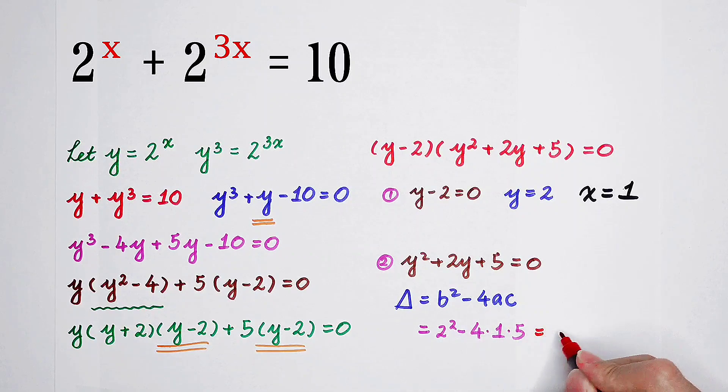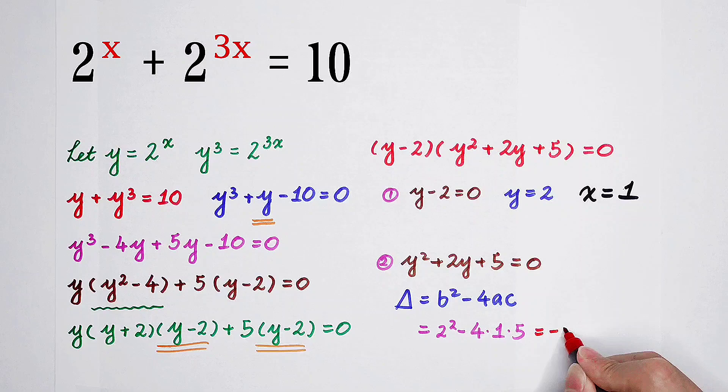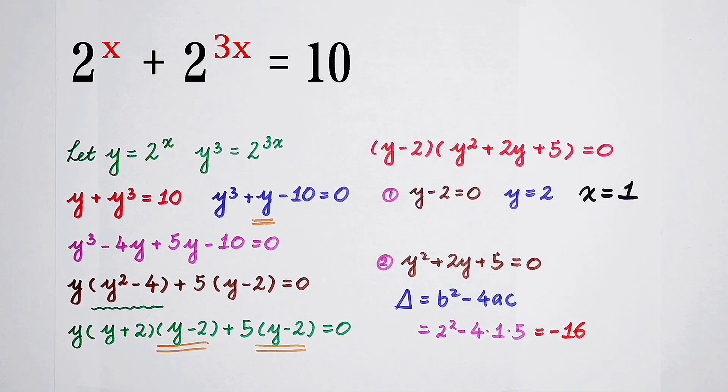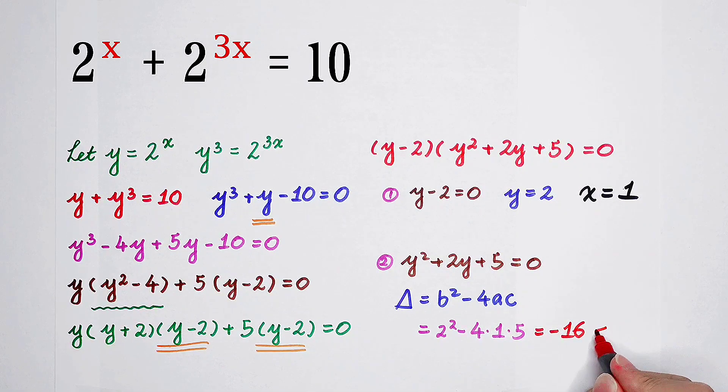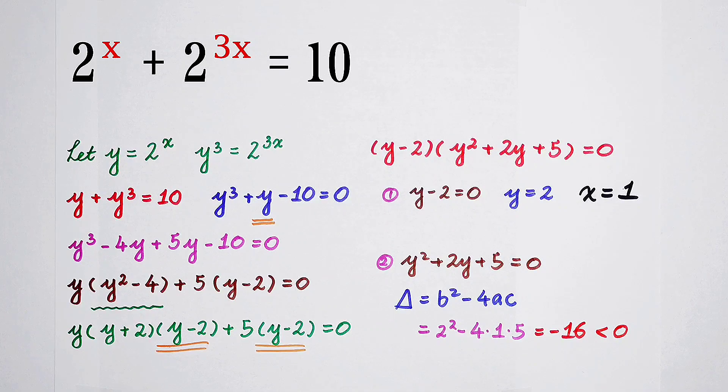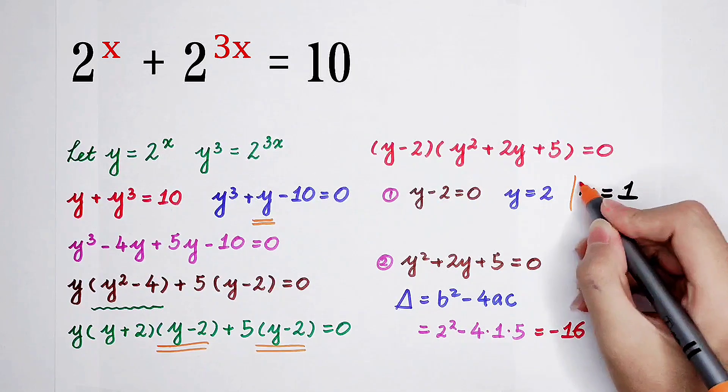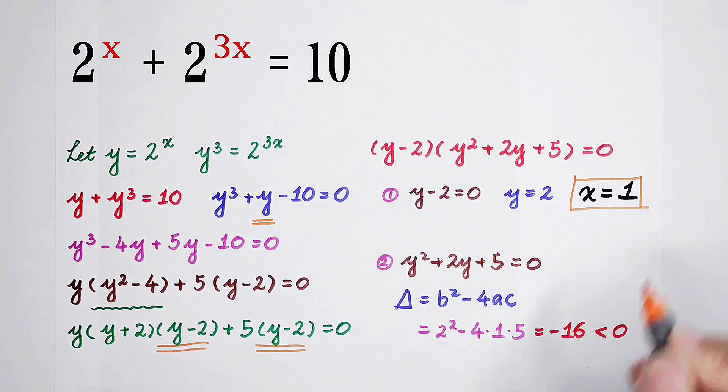It is 4 minus 20, which is negative 16. It is smaller than 0. So delta is negative, then there aren't any real roots. So we have only one real root. That is, x equals 1. Do you get it?